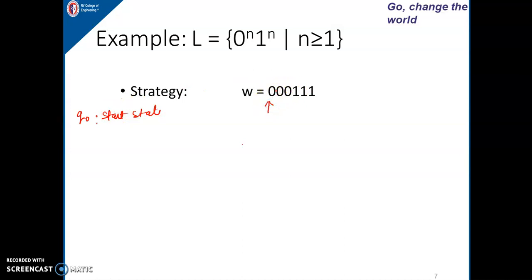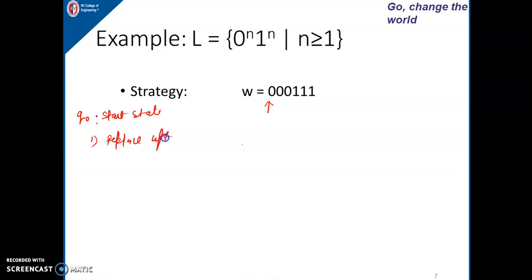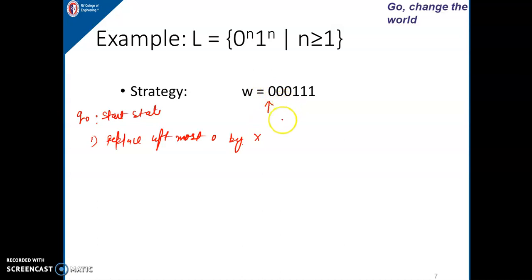The read-write head is pointing to the first symbol of the string. The general procedure to design this Turing machine is: we replace the leftmost 0 by x and change the state from q0 to q1. Initially the machine is in state q0, and once we read the leftmost 0, we replace it by x and change the state from q0 to q1.